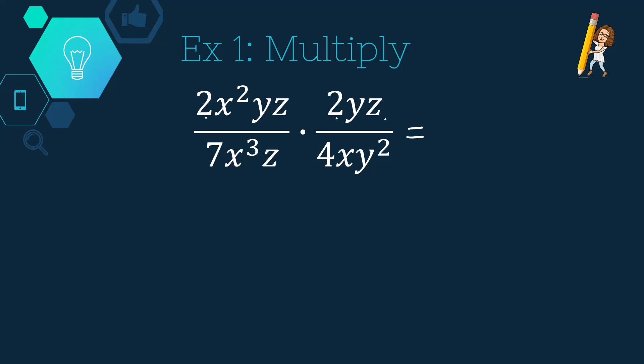So I'm going to go 2 times 2 is 4. x squared, no x's, excuse me, so I'm just going to copy it. y times y is y squared. And z times z is z squared. I'm going to put a z across through it so that I can know which one it is. Now let's multiply the denominator. 7 times 4 is 28. x cubed times x, that would be x to the fourth, because that's four x's in total. y squared, and then a single z.